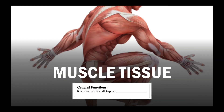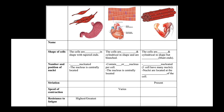Muscle tissue is responsible for all types of movement. There are three types: smooth muscle, cardiac muscle, and skeletal muscle. Smooth muscle cells are spindle-shaped with tapered ends. Cardiac muscle cells are elongated and cylindrical with branches at the end. Skeletal muscle cells are also elongated and cylindrical in shape, but unlike cardiac muscle cells, they are unbranched.